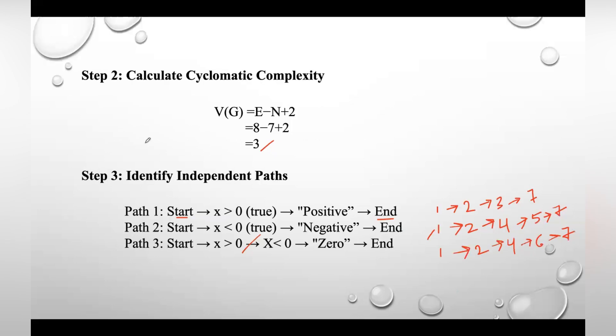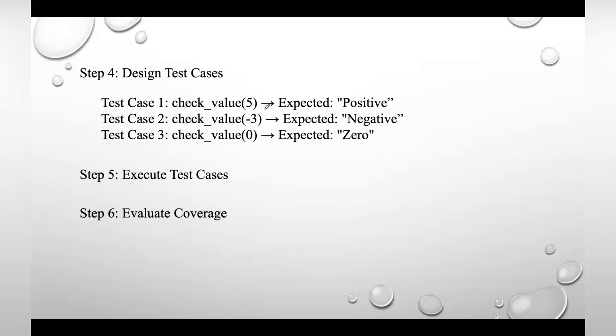We will get three test cases here based on this value. We'll take one positive value, one negative value, and zero. You can take any value here, and the outcome will be expected: positive for the positive value, negative for the negative value, and zero if the value is zero.